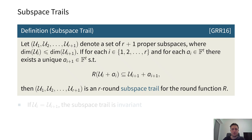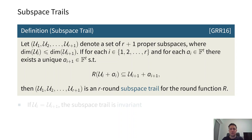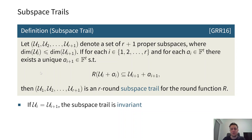What is a subspace trail? If we consider a set of subspaces U_1 to U_{r+1}, all proper subspaces, and if this relation holds — essentially the round function applied to one of these subspaces plus a constant is a subspace of the following subspace plus some value — then we call this set an r-round subspace trail. If all these U's are the same, then we say that the subspace trail is invariant.